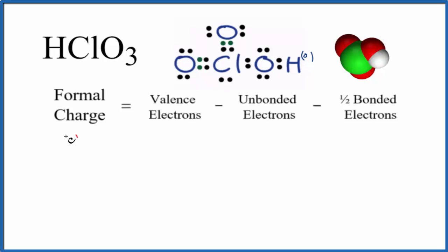For the chlorine in the center, chlorine is in group 17 on the periodic table, also called 7a. It'll always have seven valence electrons. For unbonded electrons, there are only two electrons around the chlorine atom that aren't involved in chemical bonds, right there. So we have two unbonded, and then one half of the bonded.